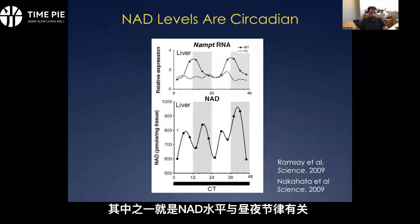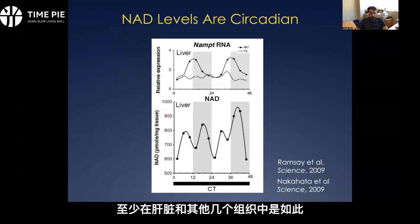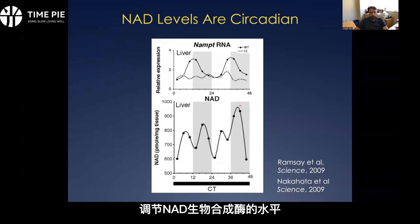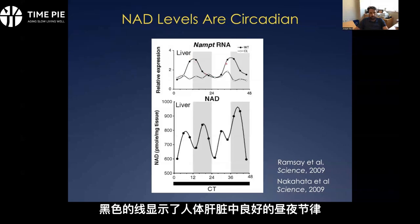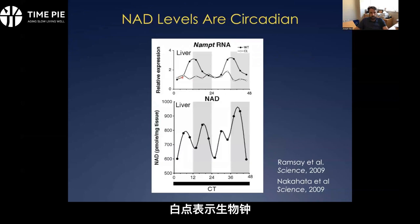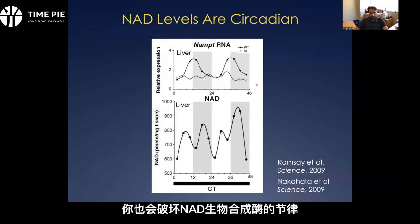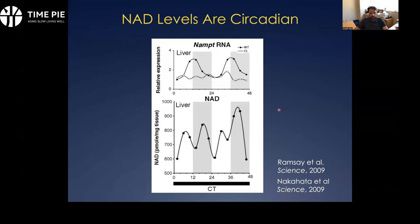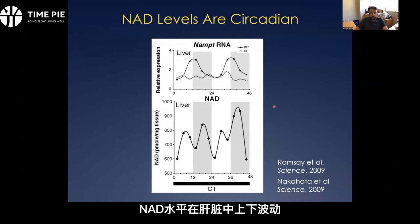One reason to think that might be the case is that NAD levels are circadian, at least in the liver and several other tissues. Our body has put a lot of effort into regulating the levels of NAD biosynthetic enzymes — this is nicotinamide phosphoribosyltransferase (NAMPT), and the black trace shows the nice circadian rhythm in a wild-type liver. The white dots show a clock mutant: if you break up the circadian clock, you also lose rhythmic expression of NAD biosynthetic enzymes. On the bottom you can see NAD levels actually going up and down in the liver over a circadian time course.